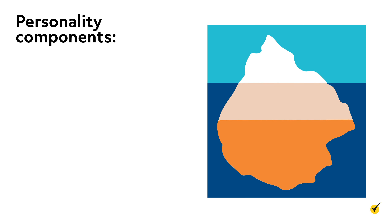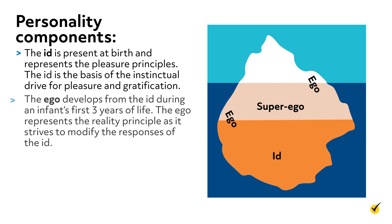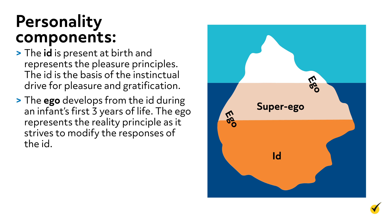Freud believed that the personality was divided into three components: the id, ego, and superego. First, the id is present at birth and represents the pleasure principle — the basis of the instinctual drive for pleasure and gratification. Second, the ego develops from the id during an infant's first three years of life. The ego represents the reality principle as it strives to modify the responses of the id, such as through delayed gratification, so that they are socially acceptable.